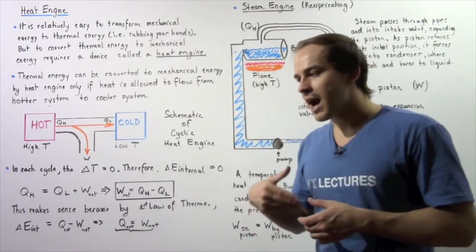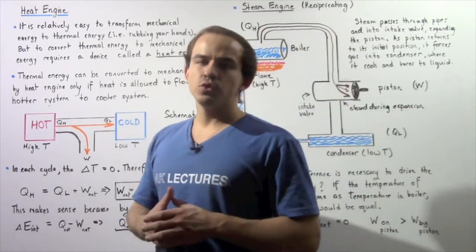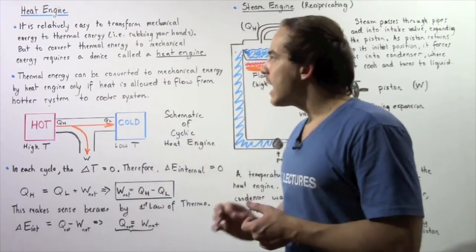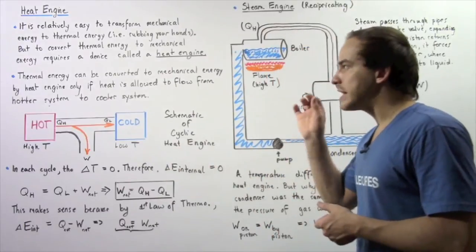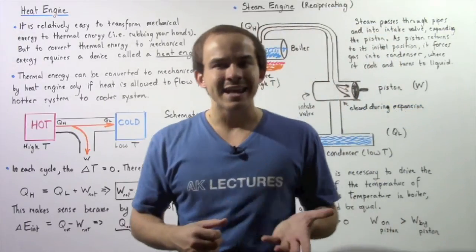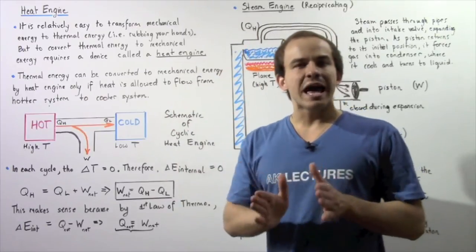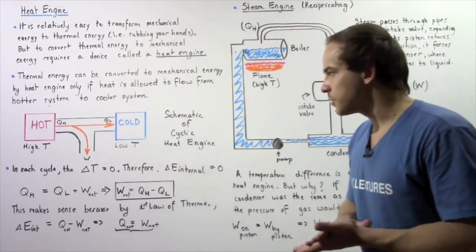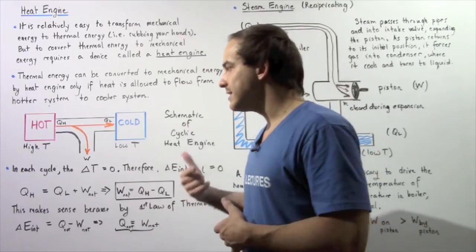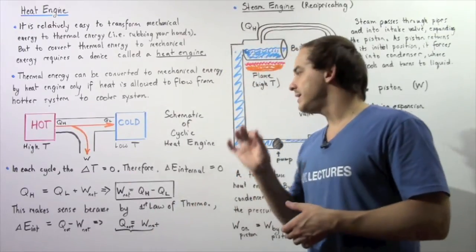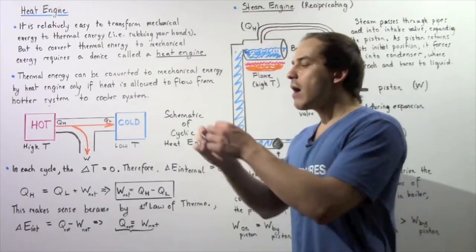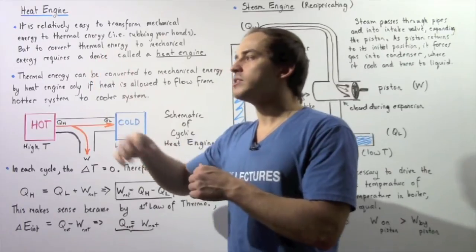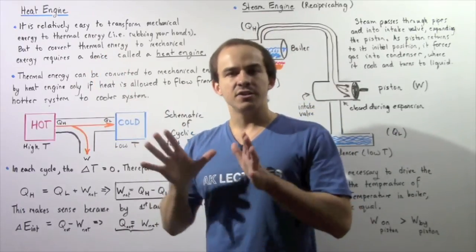The entire idea behind a heat engine is to transform thermal energy into mechanical energy. Thermal energy can be transformed into mechanical energy by a heat engine only if the energy is allowed to flow from an object at a higher temperature to an object at a lower temperature. Let's look at a generalized schematic of a cyclic heat engine. Cyclic simply means our process begins at some initial point and ends back at that same initial point.